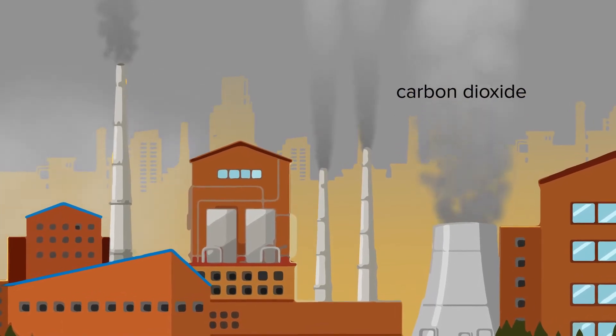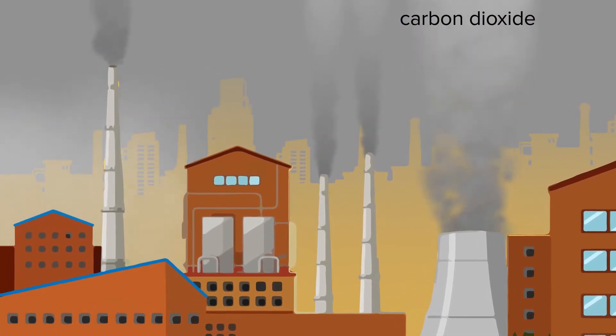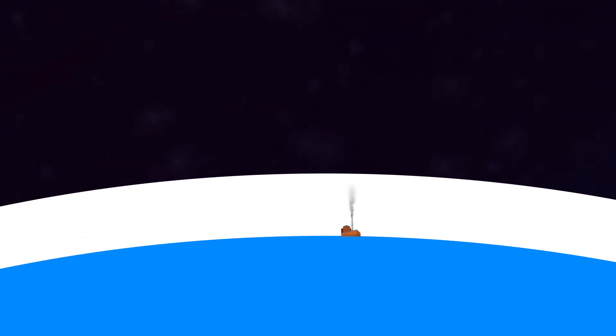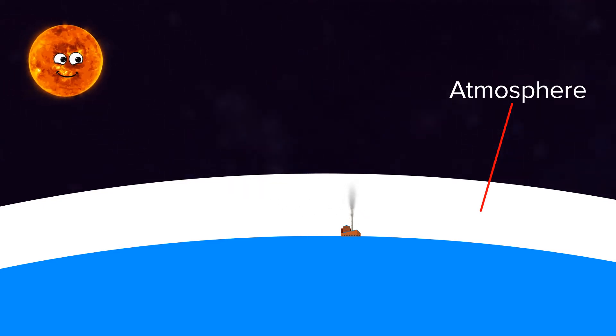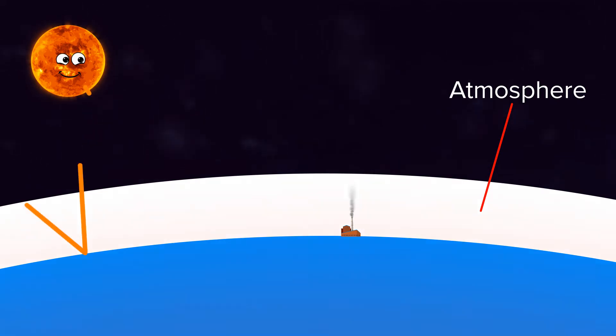So what does this have to do with your rising temperature? I'm getting there. Basically, carbon dioxide is released into a layer of air close to the Earth called the atmosphere. Then, when you shine your light down on me, sun, carbon dioxide traps the heat, which makes my temperature rise.